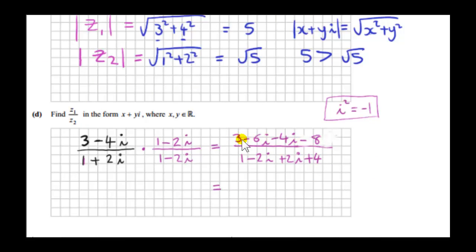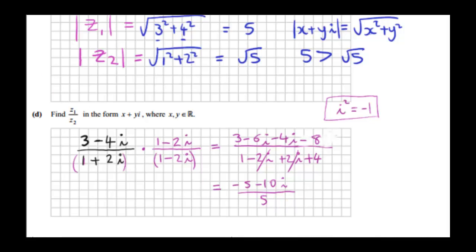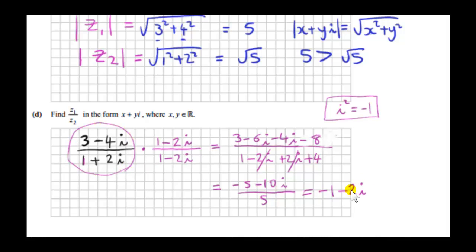Let's simplify the numerator. Plus 3 minus 8 is minus 5, and minus 6i minus 4i is minus 10i. In the denominator the imaginary terms cancel out, so we get 5. That always happens — if we multiply a complex number by its conjugate, we always get a real number. That's the reason why we multiply above and below by the conjugate of the denominator: we want a real number here so we can write this as a single complex number. We have minus 5 over 5, which is minus 1, and minus 10i over 5 is minus 2i. So we have written these two complex numbers as a single complex number.